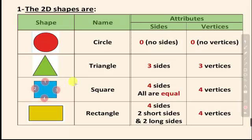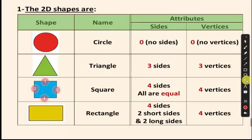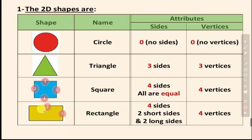The next shape has four sides and all sides are equal, with four vertices — that's the square. Then the rectangle also has four sides: one, two, three, four — and four vertices. But in a rectangle, not all sides are equal; two sides are long and two sides are short.